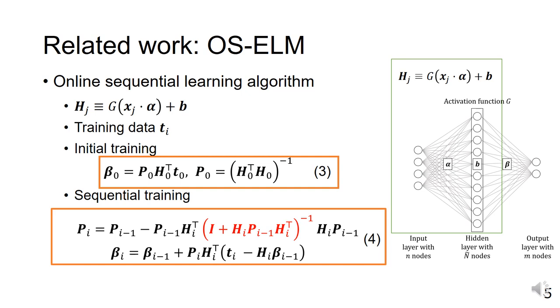The training of OS-ELM is separated into two stages: initial learning and sequential learning. Initial learning is performed once when the data is identical to the number of nodes in the hidden layer for the first time, as shown in equation 3. After the initial learning, sequential learning is performed based on equation 4.